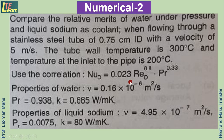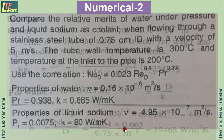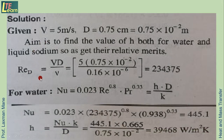The Nusselt number correlation is given. Properties of water — kinematic viscosity, Reynolds number, thermal conductivity — and properties of liquid sodium are also given. First, calculate Reynolds number using Re = V·D/ν. The diameter given in centimeters is converted to meters by multiplying by 10⁻². For water, substituting velocity, diameter, and kinematic viscosity gives the Reynolds number.